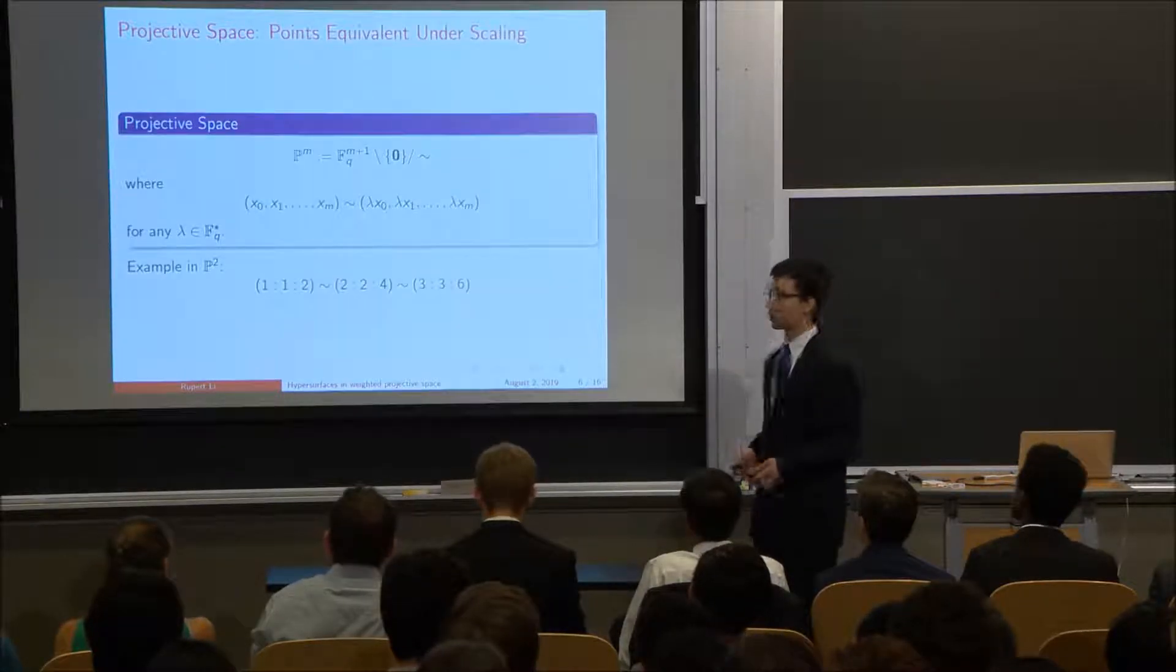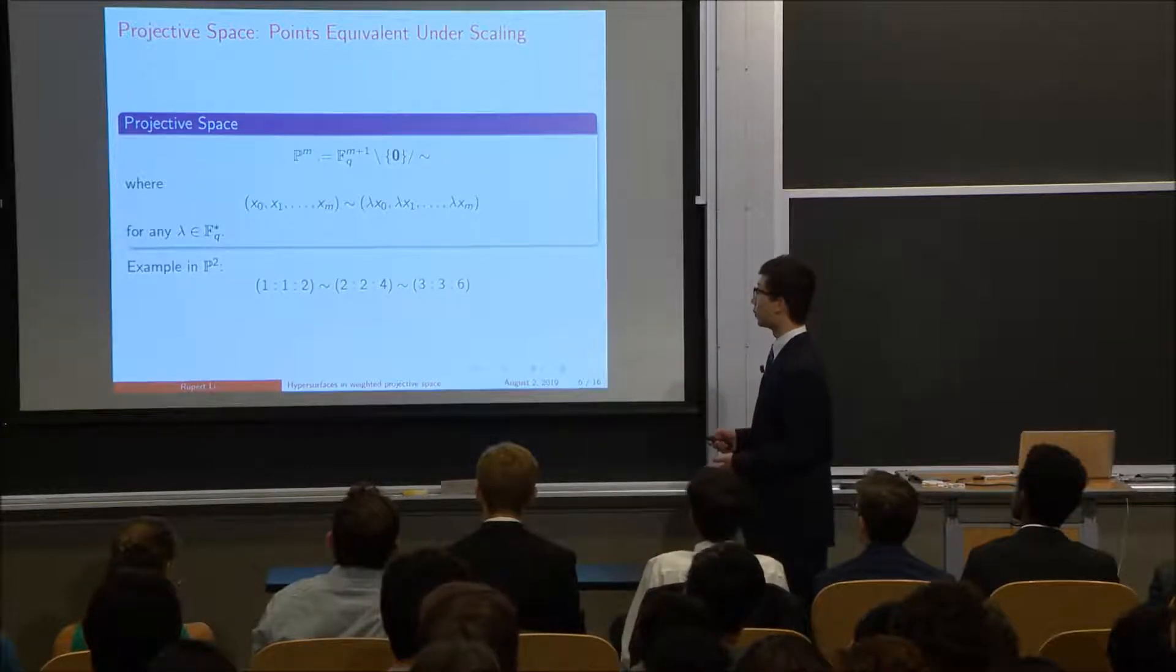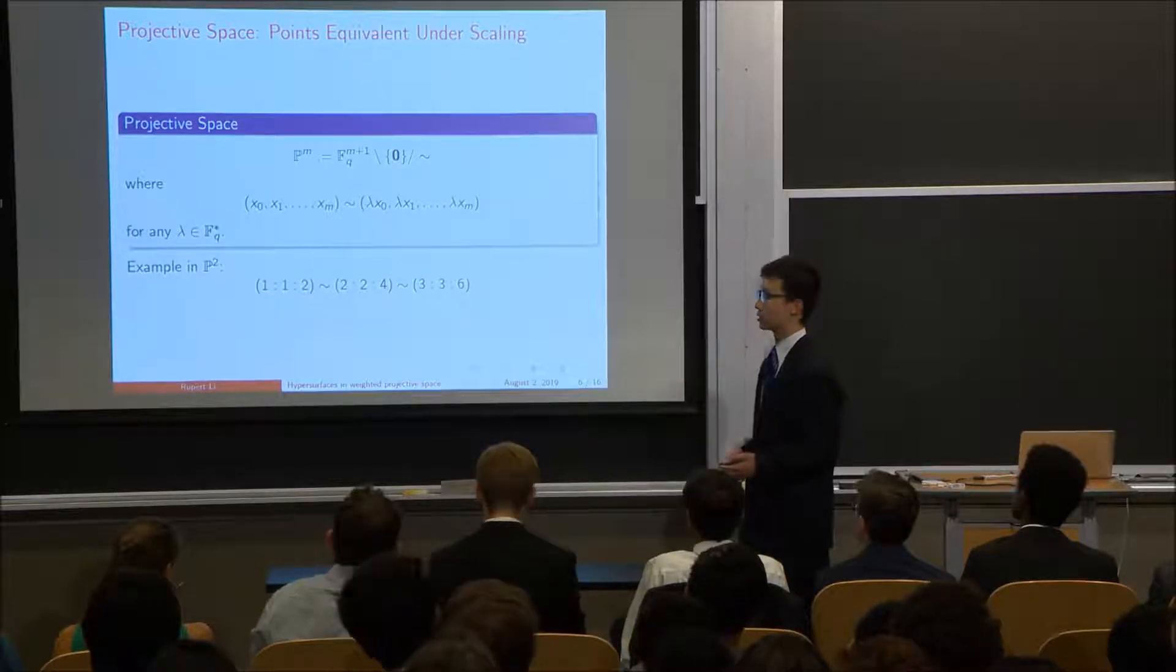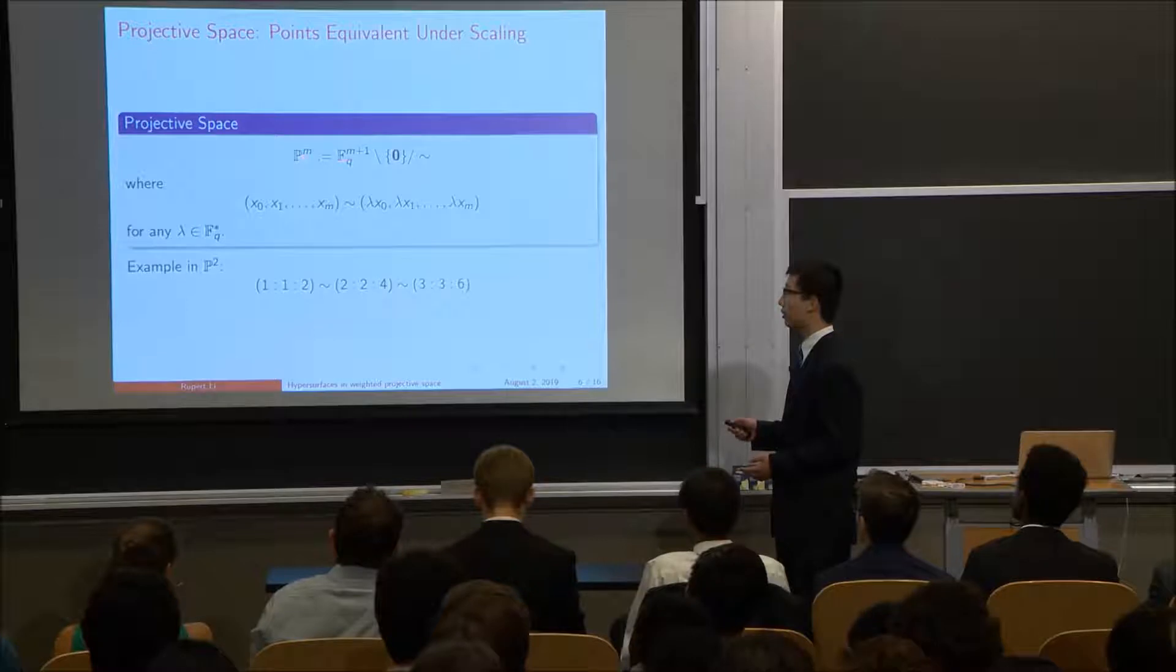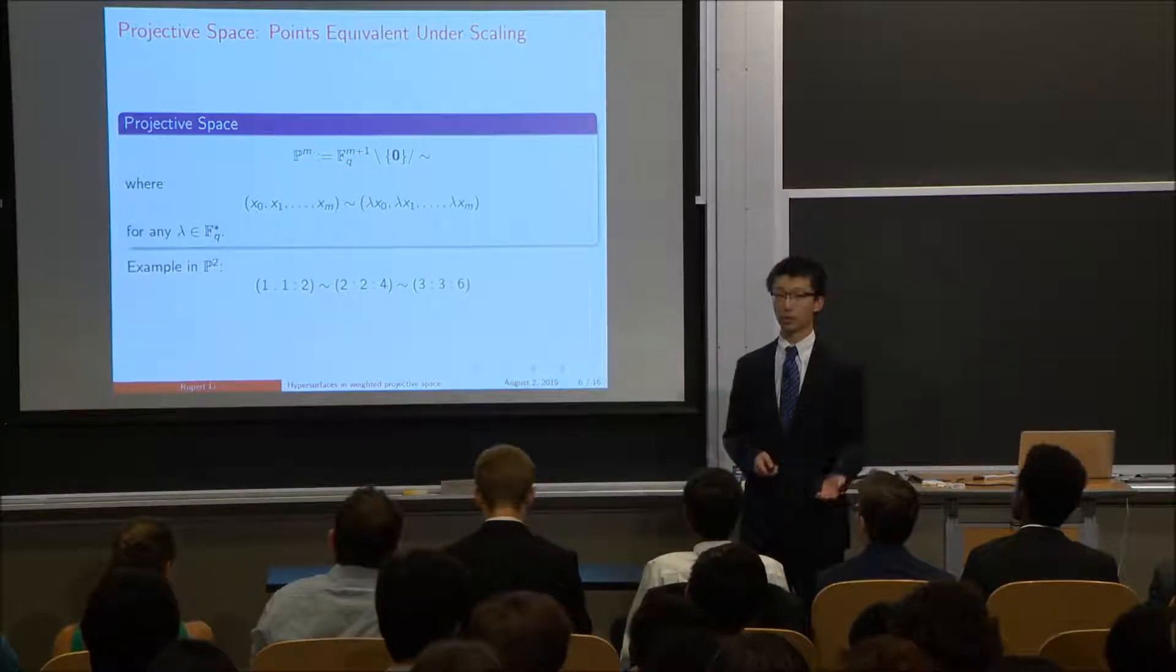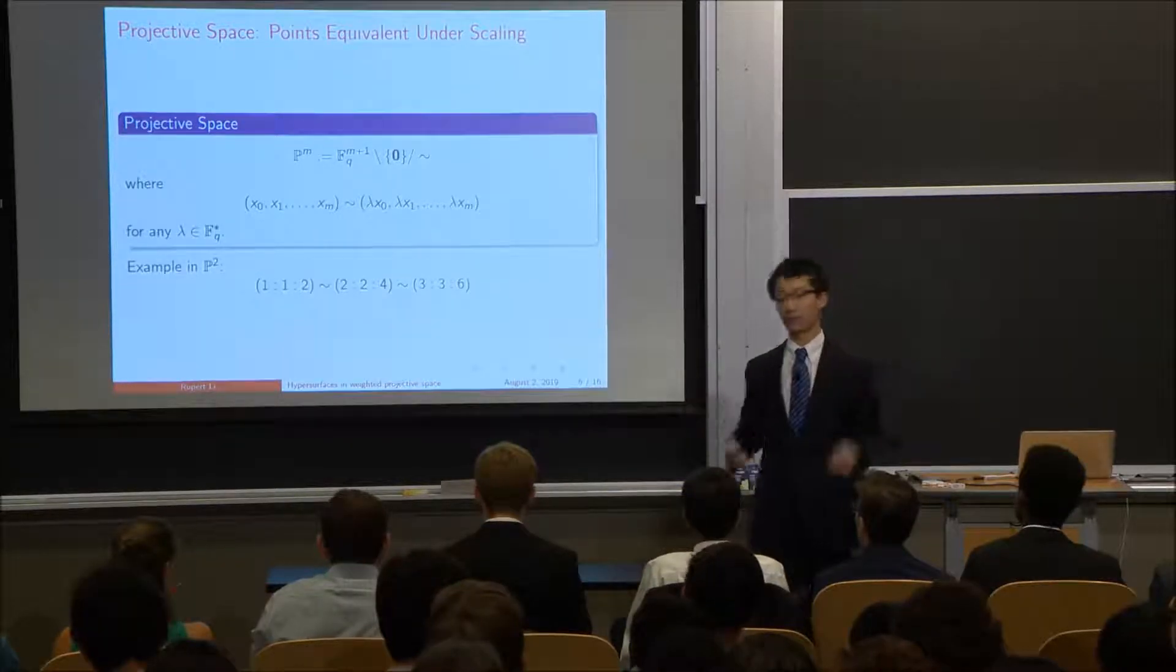So this is the formal definition of projective space. And all that you really need to know here is that this definition just formalizes the idea that points are equivalent under scaling. And one thing to note is that when you have m dimensions, you actually need m plus 1 coordinates. So even though we're in the two-dimensional case of the plane, we do need three coordinates to describe all the points there because we extended the space.